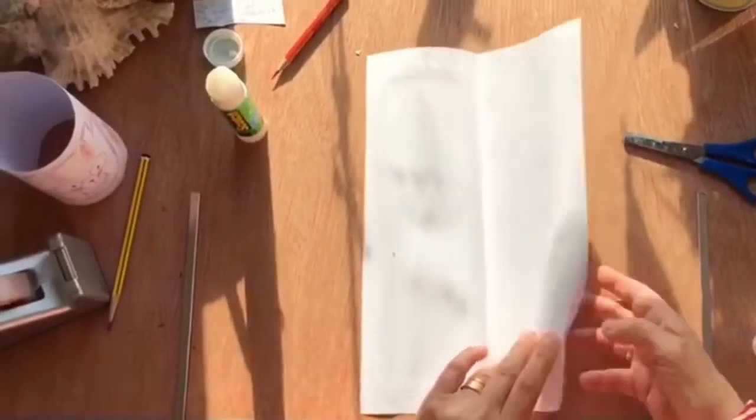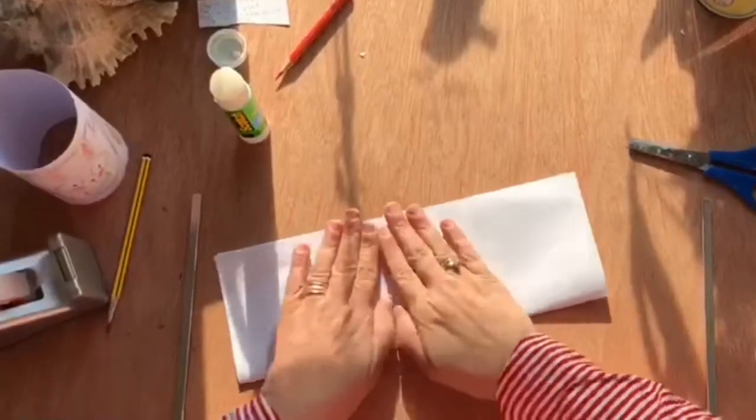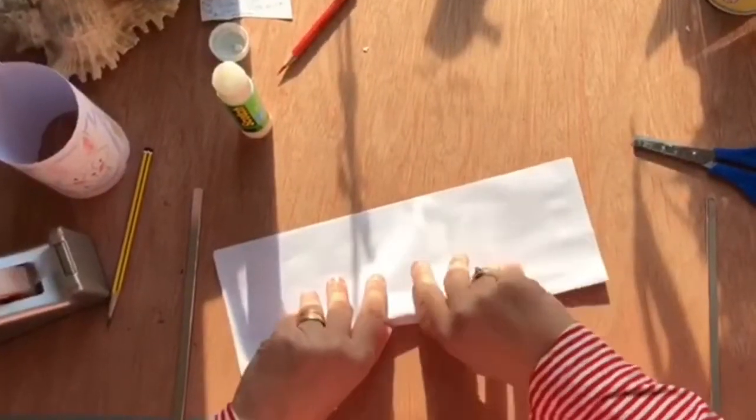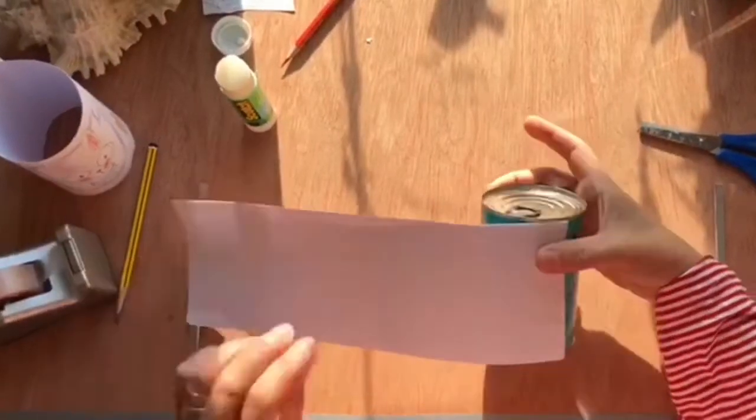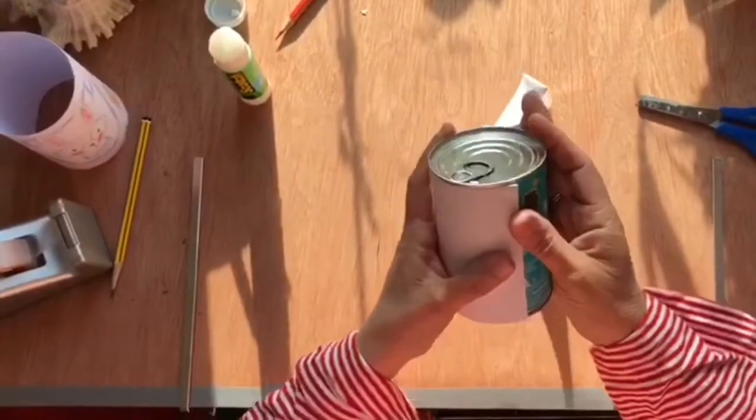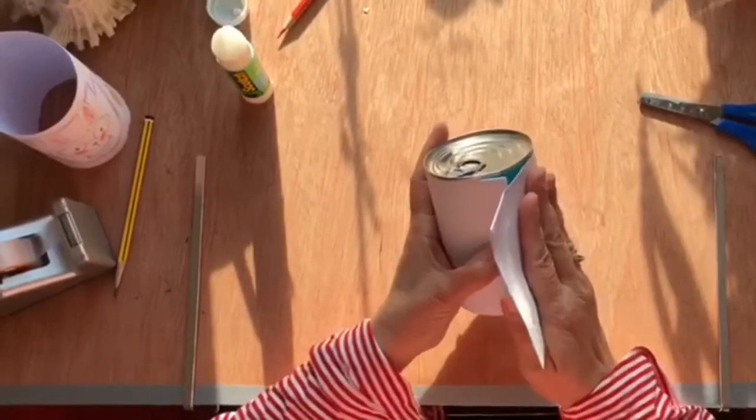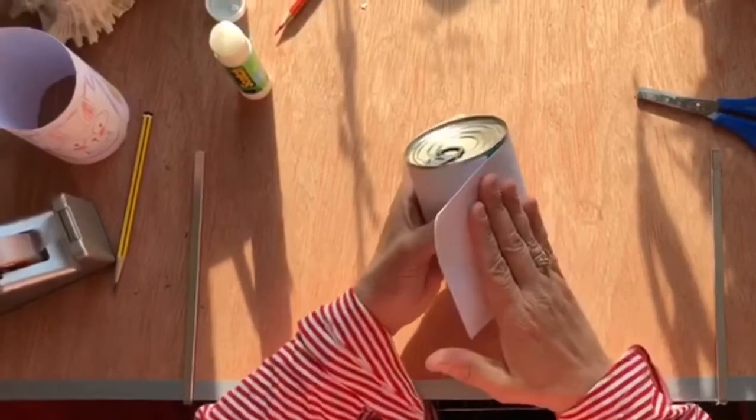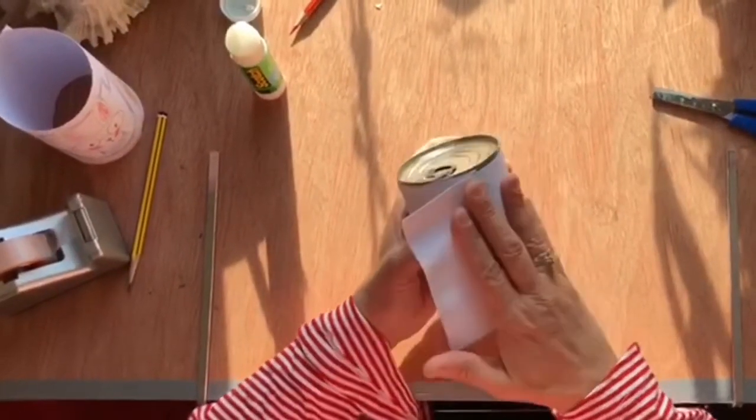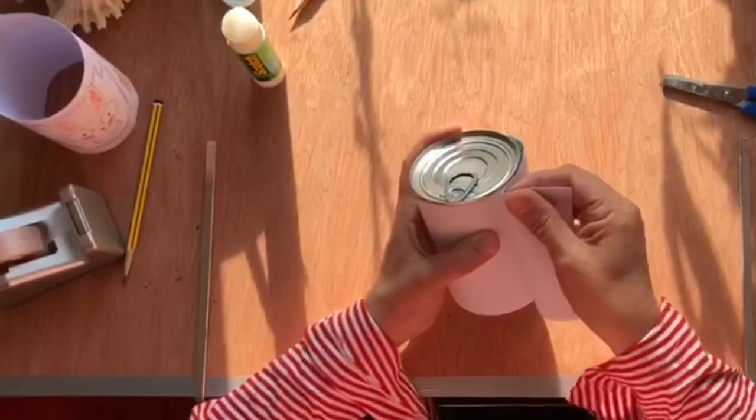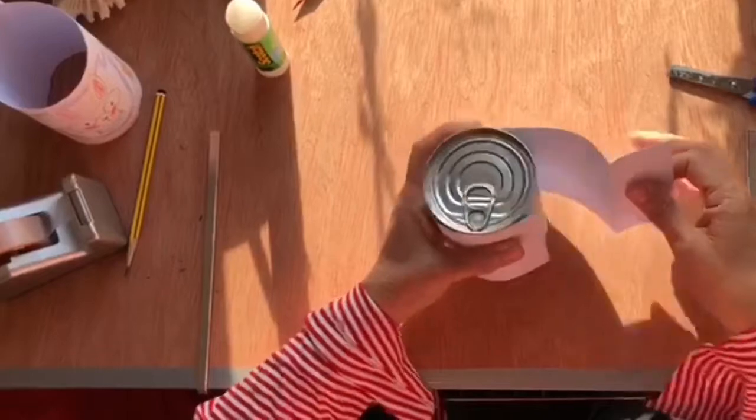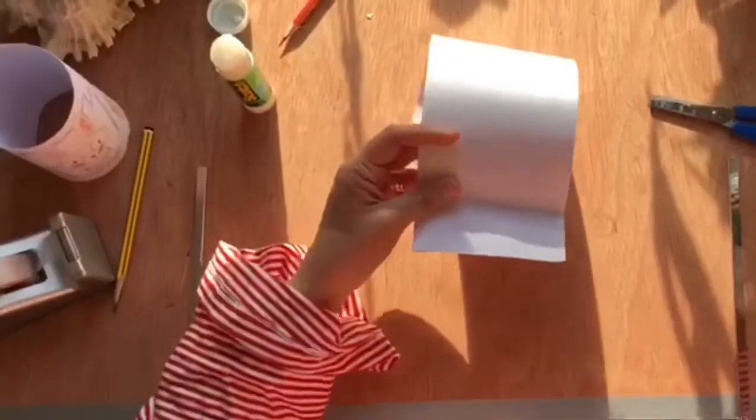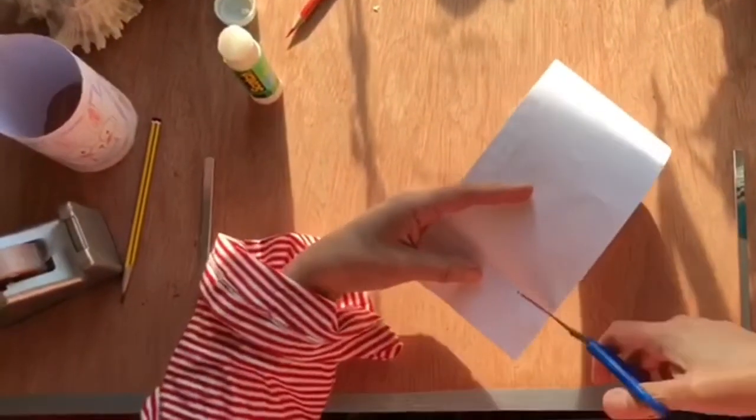Fold the paper back again. And you are ready. Now, you're gonna get a can and you are going to put the paper around the can. In case the paper is too big, this is what you're gonna do. You hold the can and mark with your fingers where the paper should stop. Just take it down, get scissors and trim it.